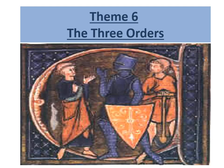Today we are going to start Theme Six: The Three Orders. This concept is quite familiar because in this chapter you are going to discuss the three estates of French society, which you all know were nobility, priests, and peasants. The concept is the same but now it is explained in a more detailed manner.